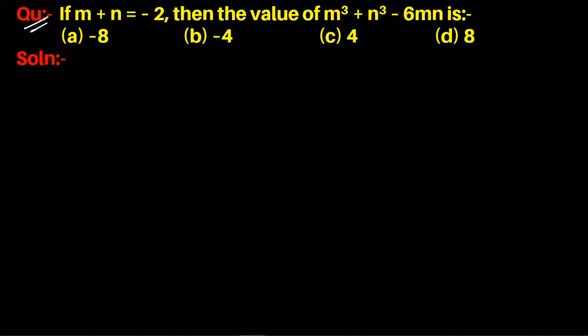The question is: if m + n is equal to -2, then what is the value of m³ + n³ - 6mn?